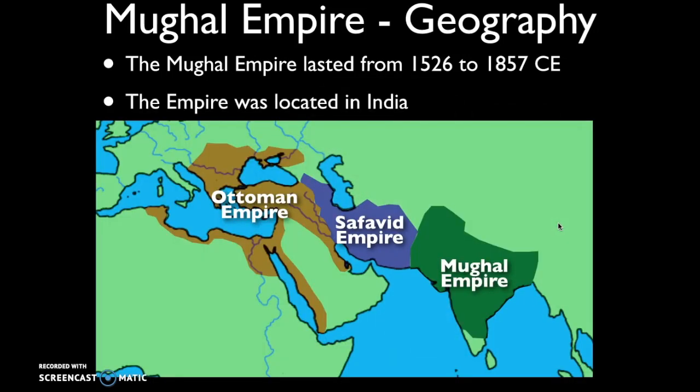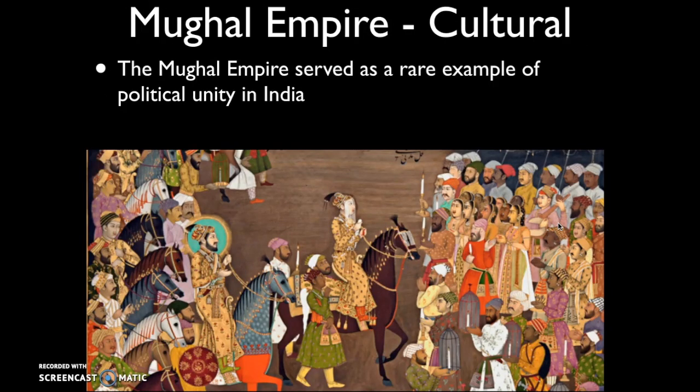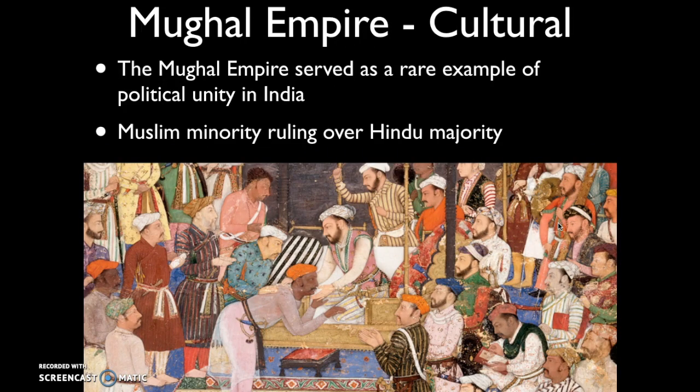The Mughal Empire, located in India in South Asia, served as a rare example of political unity in India — given that the general rule is India is very diverse and politically decentralized. As with the Delhi Sultanate, we again have a Muslim minority ruling over a Hindu majority.